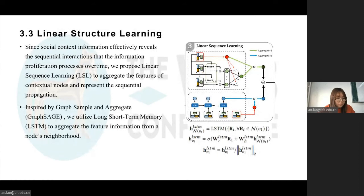The drift of rumors through social networks not only forms non-linear patterns but also establishes linear interactions. In other words, the responses of the public to rumor claims are dynamic and change over time. Since social context information effectively reveals the sequential interactions during the information proliferation process over time, we propose linear sequence learning to aggregate the features of contextual nodes and represent the sequential propagation.